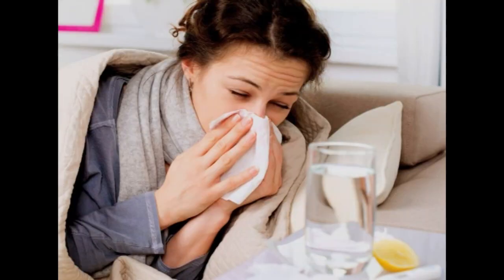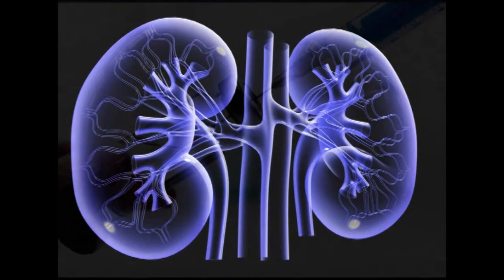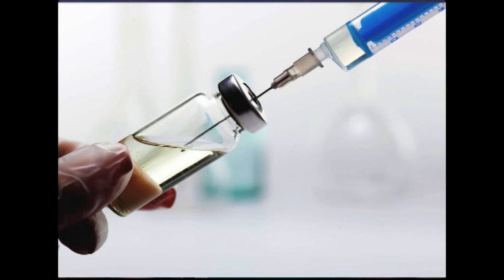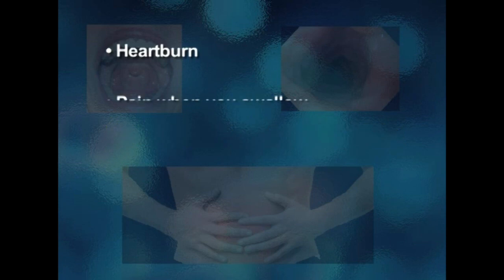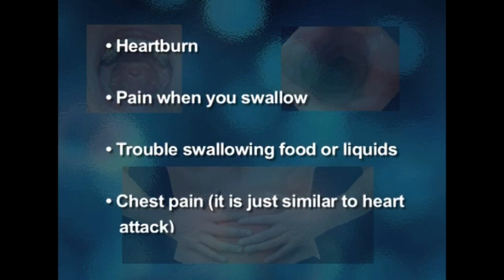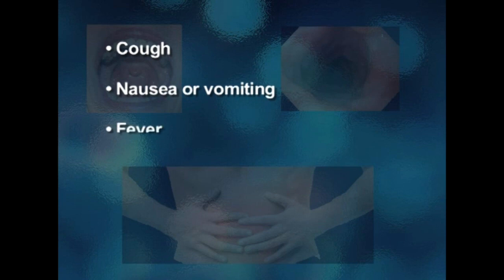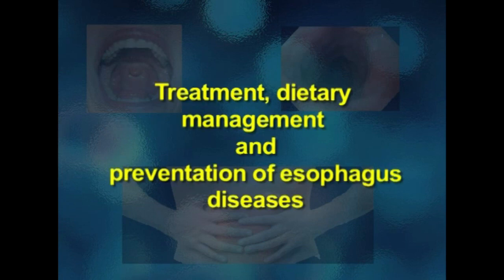People who have a weak immune system are more likely to get esophagitis. This includes people with HIV, diabetes, or kidney problems, as well as older adults and people who take steroid medicine. Symptoms of esophagitis include: heartburn, pain when you swallow, trouble swallowing food or liquids, chest pain similar to a heart attack, cough, and sometimes nausea or vomiting, fever, and belly pain.